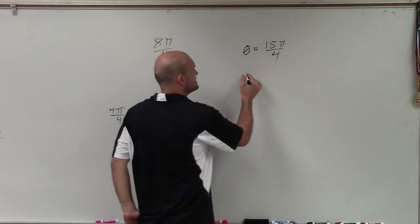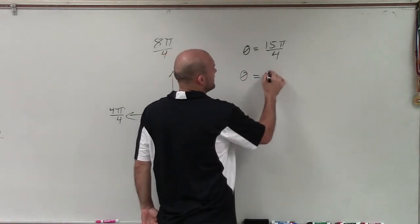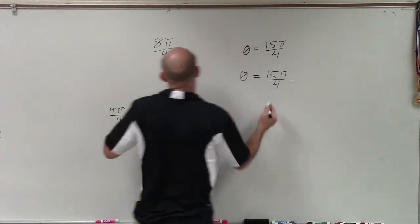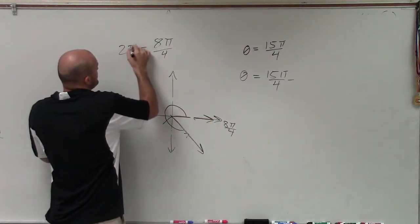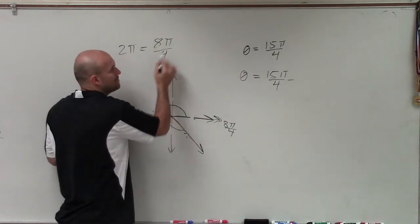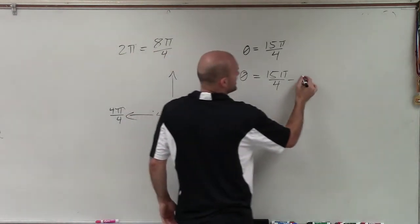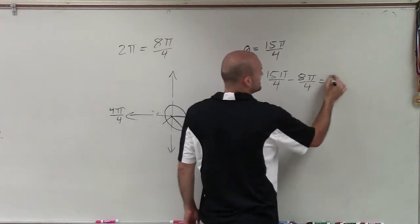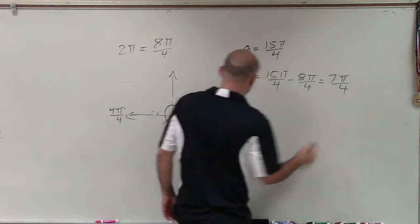So how are we going to represent this algebraically? Well, by taking 15 pi over 4, and if I subtract one revolution, which is the same thing as subtracting 2 pi. If instead of subtracting 2 pi though, let's rewrite this as 8 pi over 4, because my denominator is 4. So 8 pi over 4, now I can subtract this, and I get 7 pi over 4.